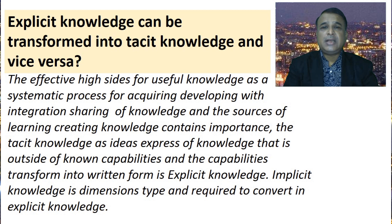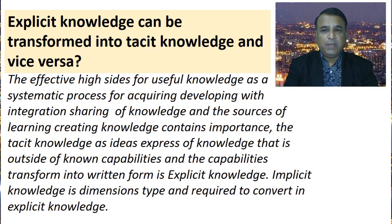Tacit knowledge is expressed as knowledge that is outside of known capabilities, and capabilities transformed into written form is explicit knowledge. Implicit knowledge is a dimension type and requires conversion into explicit knowledge.